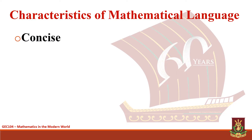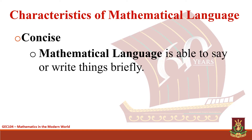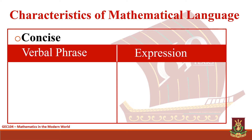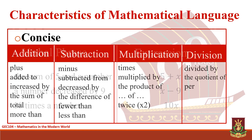Another characteristic of mathematical language is being concise. This means that mathematical language is able to say or write things briefly. We can always convert mathematical language into expressions or equations. For instance, instead of writing 'the sum of 5 and a number,' we may write 5 + x, where x is a variable representing the unknown number. A number decreased by 9 can be mathematically written as x − 9, and 10 times a number is simply 10x. Being familiar with these translations greatly helps us in understanding the language of mathematics.